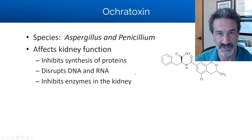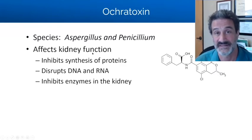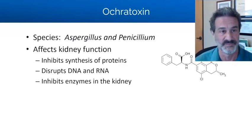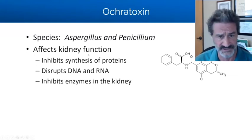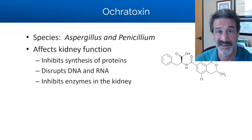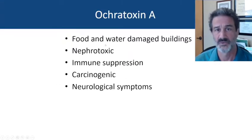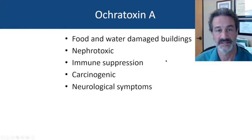Ochratoxin: ubiquitous. A study in Germany showed 100% of people tested had some level of ochratoxin in them, again from food. This affects the kidney. None of these are good at any level — you really don't want them. Some are going to be less concerning than others, but particularly in patients with kidney issues, any level of ochratoxin is probably not going to be good. You might need to do some dietary changes and certainly some building inspection for kidney issues. It's in water-damaged buildings, it's nephrotoxic, immunosuppressive, and high doses can have neurological symptoms.